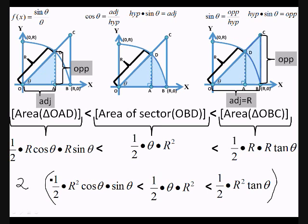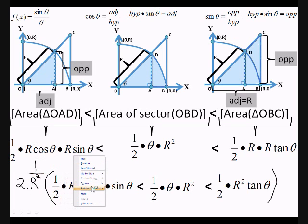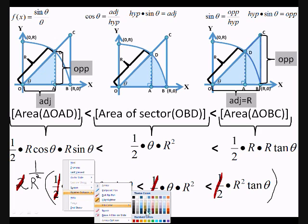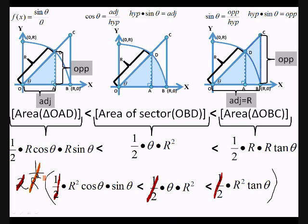We can multiply by 1 over R squared — so 1 over R squared times R squared becomes 1 and everything cancels out. The 2 cancels out with the one halves, and the 1 over R squared cancels out with R squared, R squared, and R squared. So now all that we're left with is the simplified expression.